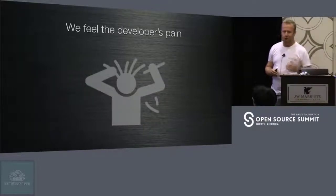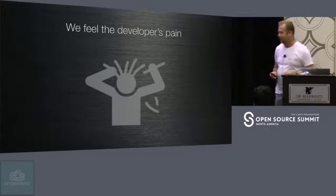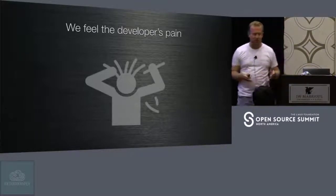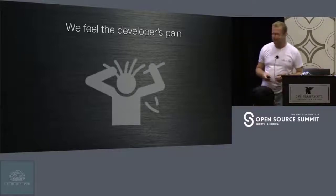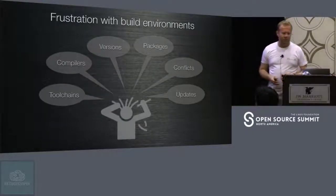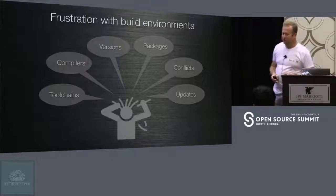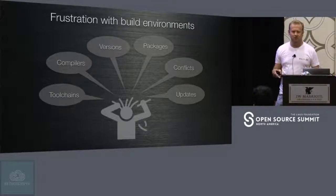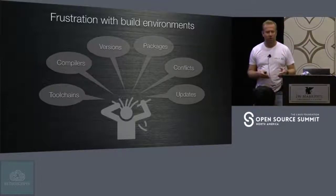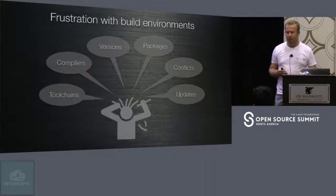Before we go into the how, we need to ask ourselves why. If you're dealing with embedded or IoT systems and you develop for one of those devices, you know that in order to compile code you usually need to deploy some toolchain, SDKs — and those have different dependencies, different compilers. You might need different toolchains for different devices, and you might need to update packages. Managing packages, compilers, and development environments always involves some kind of pain.